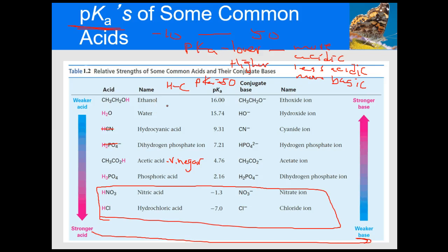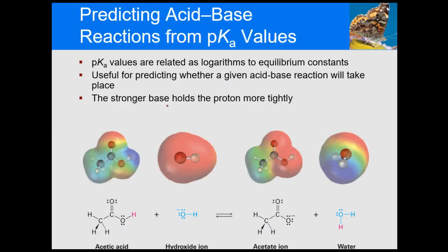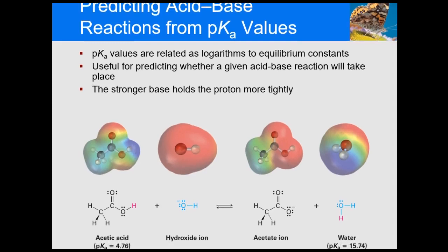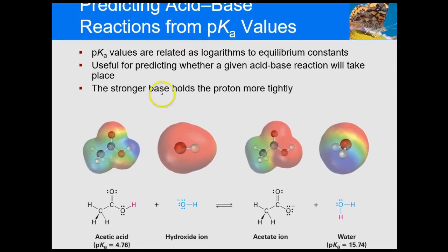The moral of the story: understand that pKa tells you how acidic something is. Lower pKa means more acidic; higher pKa means less acidic, or a stronger base. You can take this knowledge and predict if a reaction will occur. Reactions always go from the stronger acid to the weaker acid. The stronger base always holds onto a proton more tightly.